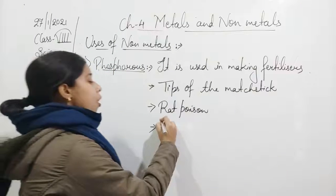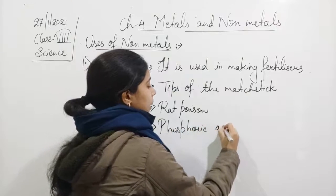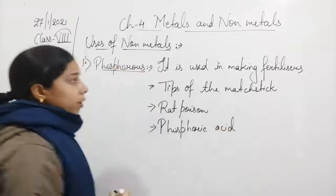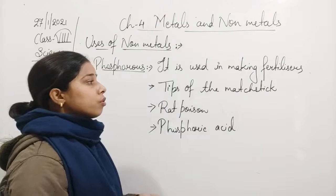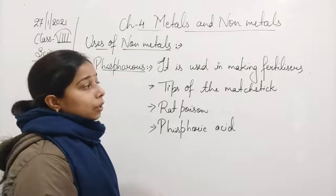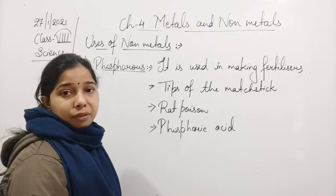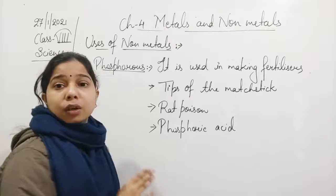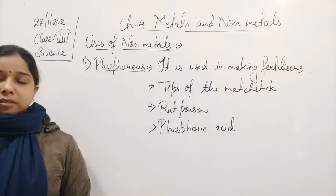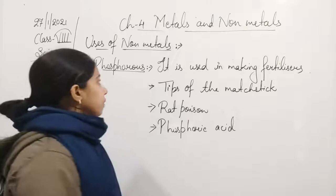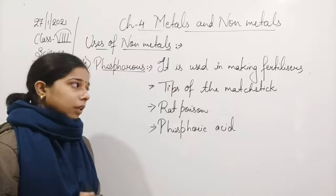Phosphorus is also used for making phosphoric acid. So, phosphorus is a non-metal used for making fertilizers, matchstick tips, rat poison, and phosphoric acid.